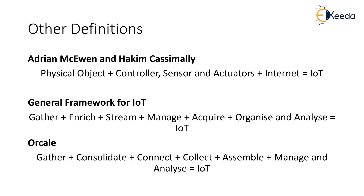Oracle defines IoT in terms of gather, consolidate, connect, collect, assemble, manage, and analyze. Levels one and two consist of a sensor network that gathers and consolidates data. The sensor connects to a gateway; data is consolidated at level two through transformation at the gateway. The gateway communicates data streams between levels two and three via a communication management subsystem. At level three, an information service consists of connect, collect, assemble, and manage subsystems. At levels four and five, real-time series analytics, data analytics, and intelligence systems operate.